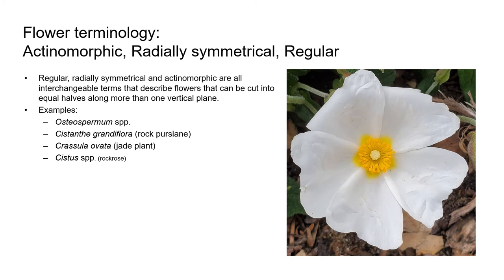A little more terminology. Regular, radially symmetrical, and actinomorphic are all interchangeable terms that describe flowers that can be cut into equal halves along more than one vertical plane. Examples include Osteospermum the African daisy, Cistanthe grandiflora the rock purslane (still often sold as Calandrinia grandiflora), Crassula ovata the jade plant, and the rock roses (Cistus).